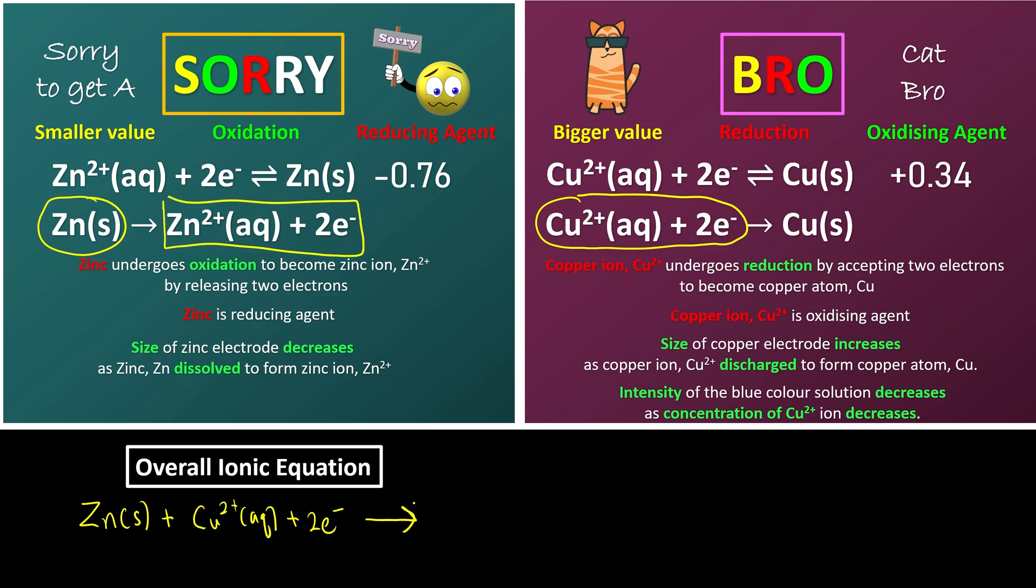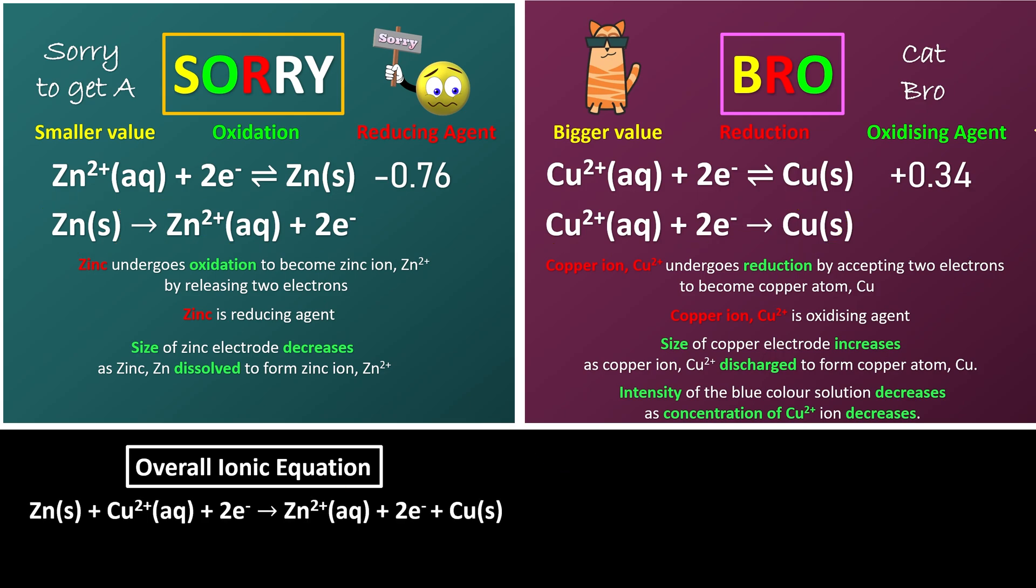And now we're going to write down whatever on the right: zinc 2+ plus 2e minus. So it's the zinc ion plus two electrons plus copper, which is solid. And all of you are mathematics experts. What we're going to do is we're going to cancel out the two electrons on the left and on the right. So what we're going to be left with is something like this.